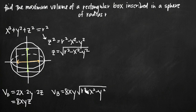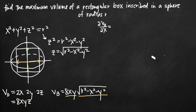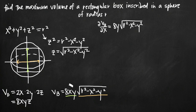To find the maximum volume we take first-order partial derivatives and find critical points. For the partial derivative with respect to x, we use the product rule, treating 8xy as one function and √(r² − x² − y²) as the second. The derivative of 8xy with respect to x is 8y, multiplied by the second function √(r² − x² − y²). Then we add 8xy times the derivative of the square root term.